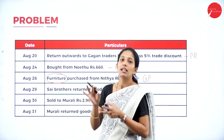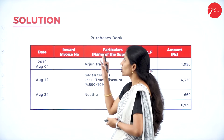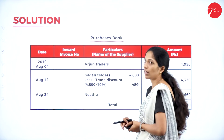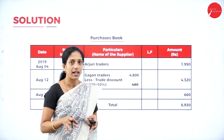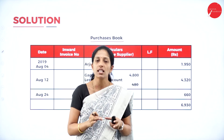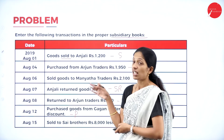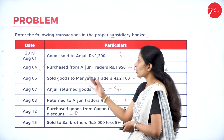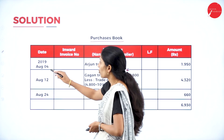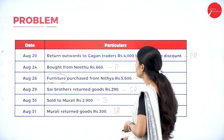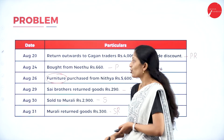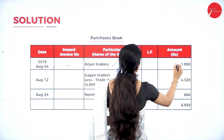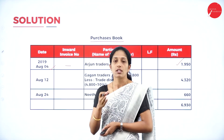Now we shall prepare the purchases book. The format is: date, inward invoice number, name of the supplier, ledger folio, and amount. Taking only purchase transactions: August 4th — purchase from Arjun Traders. No inward invoice number, so leave it blank. Name of the supplier is Arjun Traders, amount is Rs. 1,950. Write the date August 4th, supplier Arjun Traders, amount 1,950.